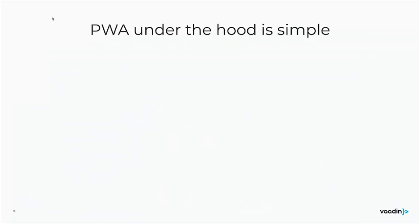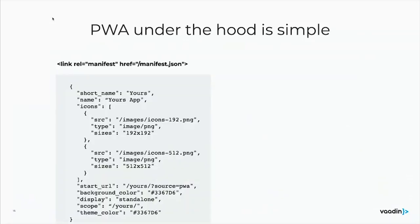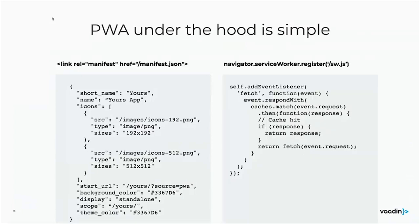PWAs are actually quite simple under the hood — you just need two things. First, a manifest that defines the application name, icon, and a few basic properties. Second, a Service Worker, which defines how the network is managed and enables offline functionality. This is just a few lines of JavaScript. Basically any web page that adds these two things can be called a progressive web app, though it won't necessarily include all the features from the Microsoft definition.